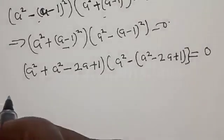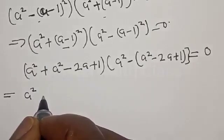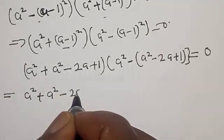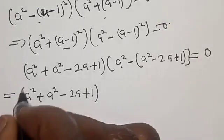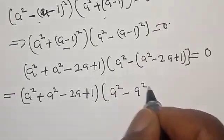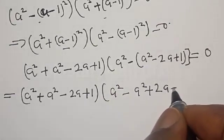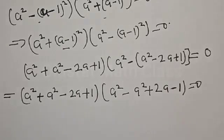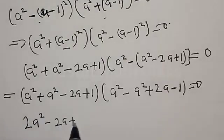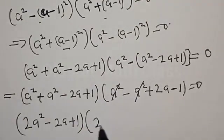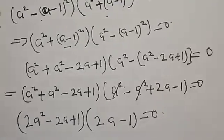Now our equation becomes: a² plus (a² minus 2a plus 1), then open bracket: a² minus (a² minus 2a plus 1) equal to zero. So a² plus a² minus 2a plus 1 gives 2a² minus 2a plus 1. Inside the other bracket, the a² terms cancel, and we are left with 2a minus 1 equal to zero.